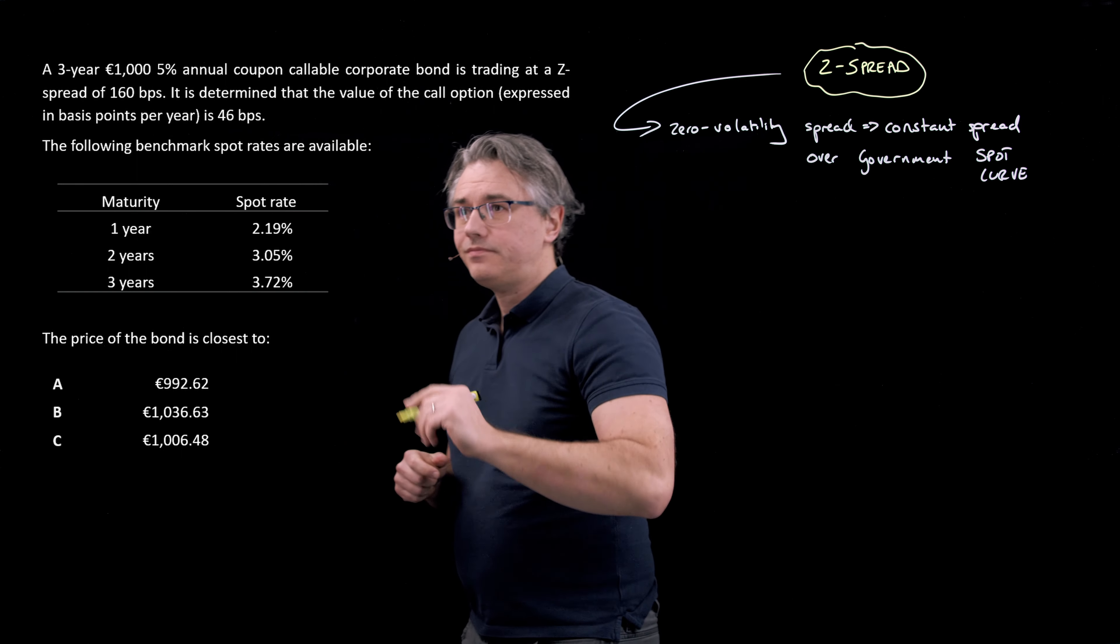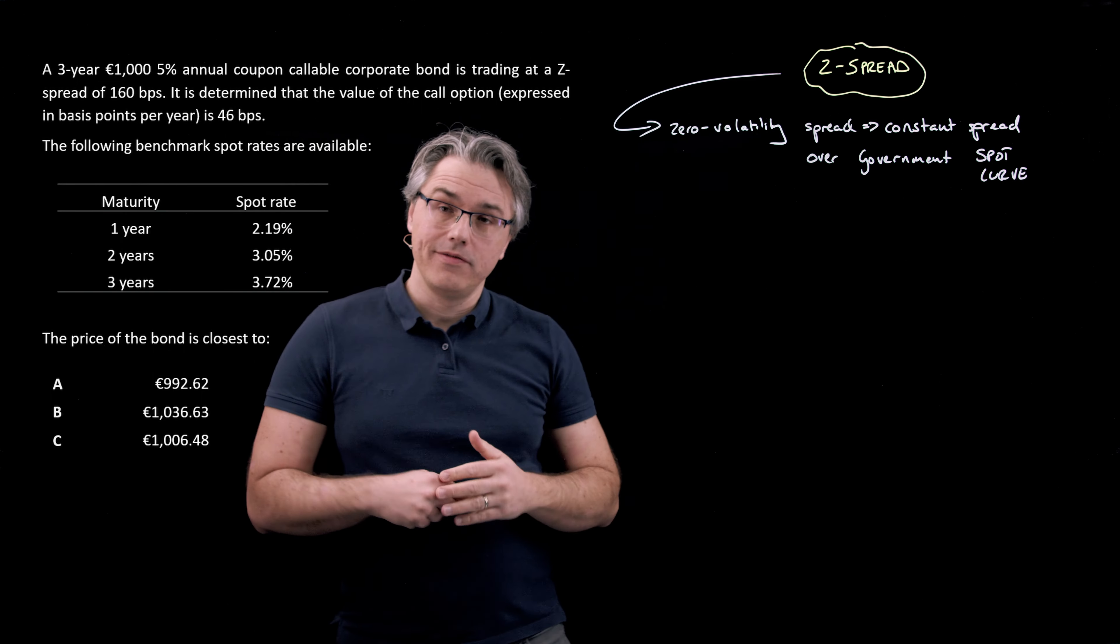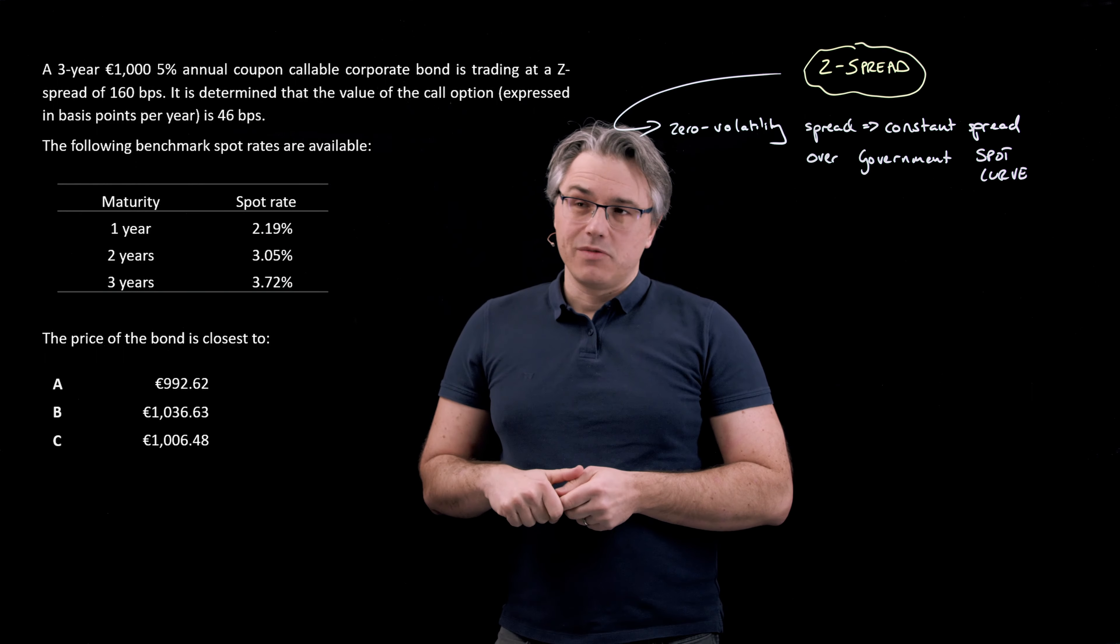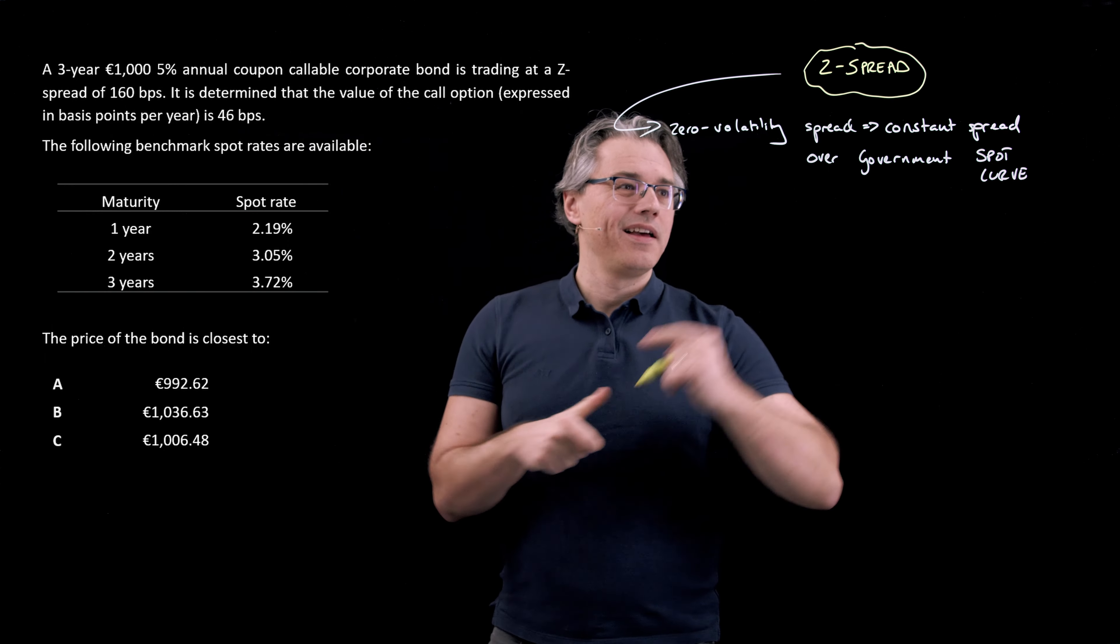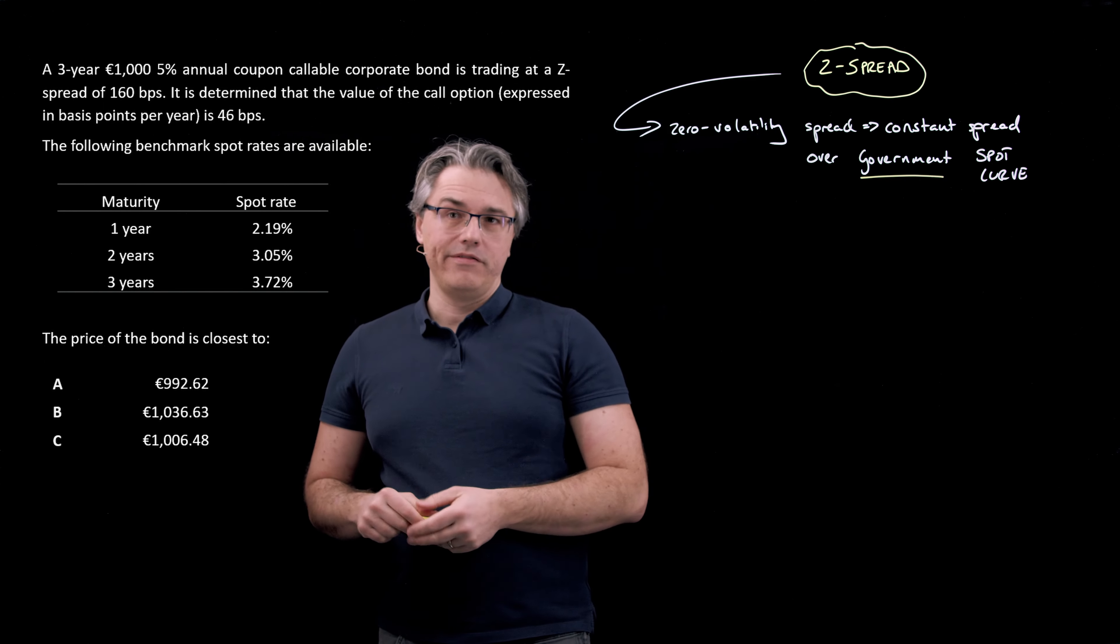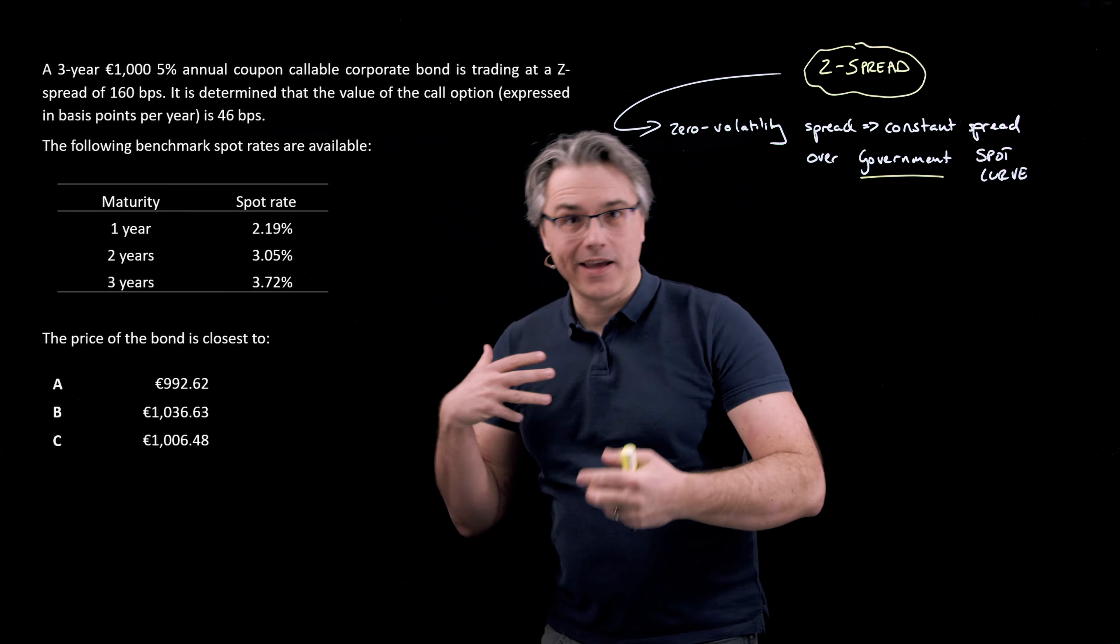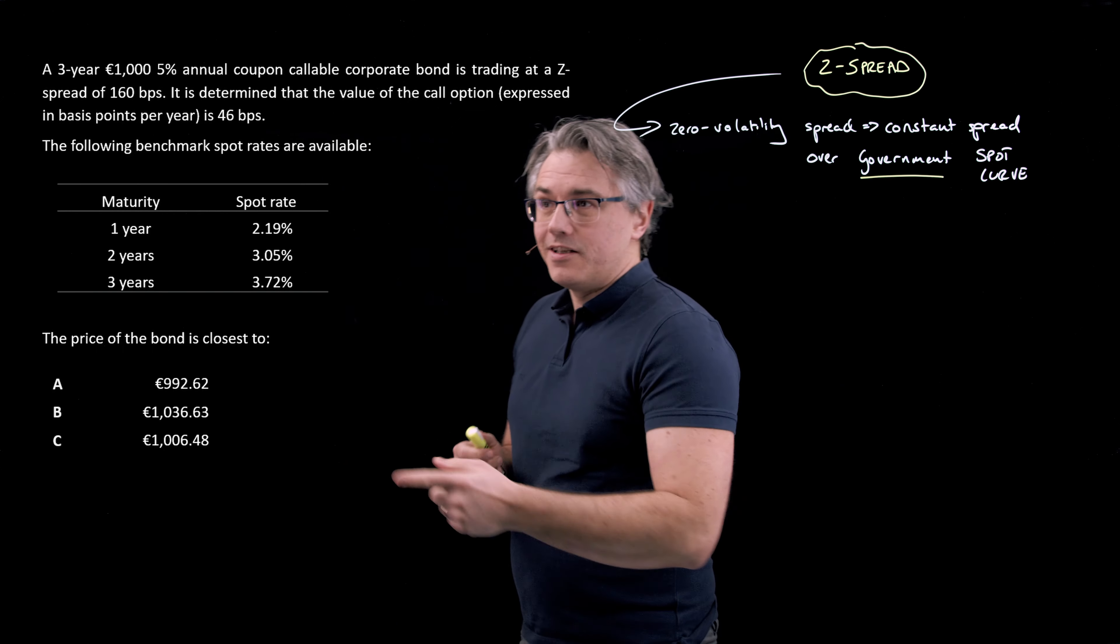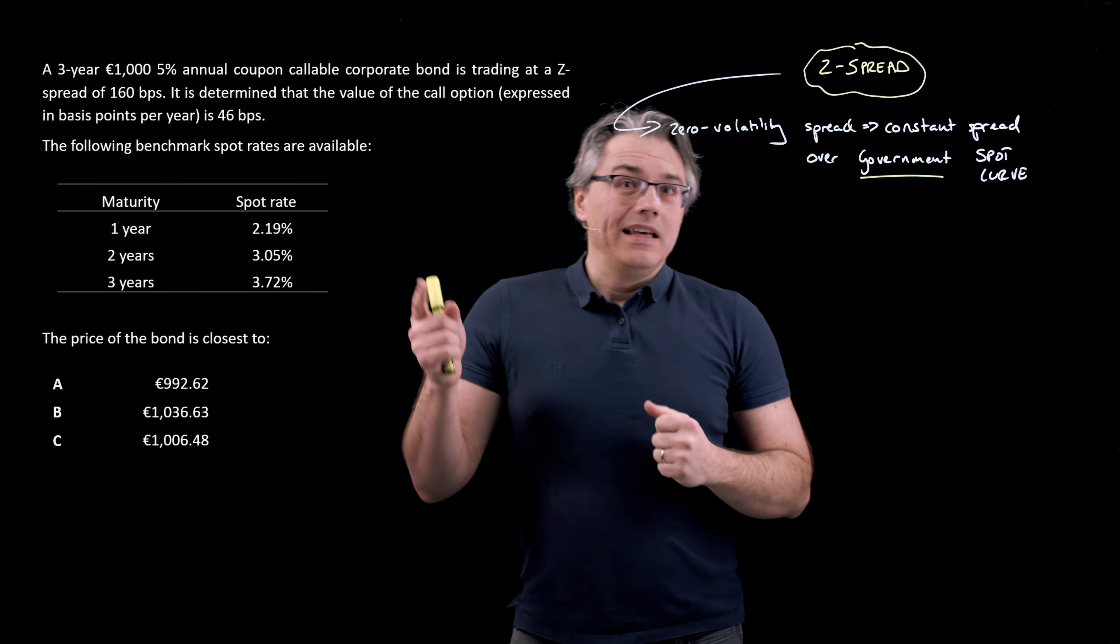We're told in the question that the Z-spread is 160 basis points. What that implies is if you take these spot rates to discount future cash flows associated with bonds, because these are described as benchmark spot rates, they would be relevant for valuing or discounting cash flows associated with a government bond, given its low level of risk. However, when you are discounting corporate bonds, or in particular callable bonds, which add an extra element of risk for the holder of these bonds, you shouldn't be discounting them using the benchmark spot rates, which when taken together make up a curve. You should be adding a bit of a premium. And that premium is called the Z-spread.